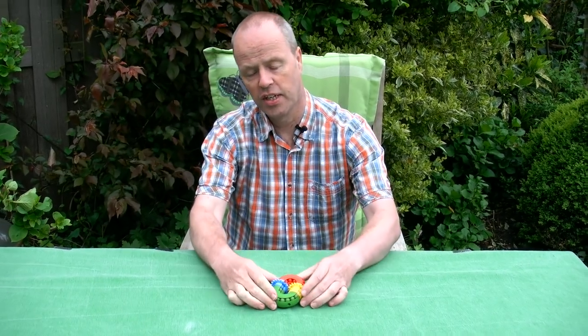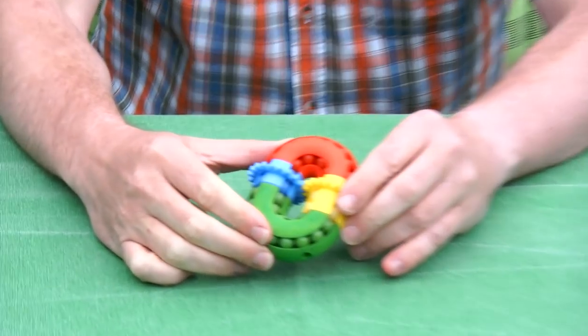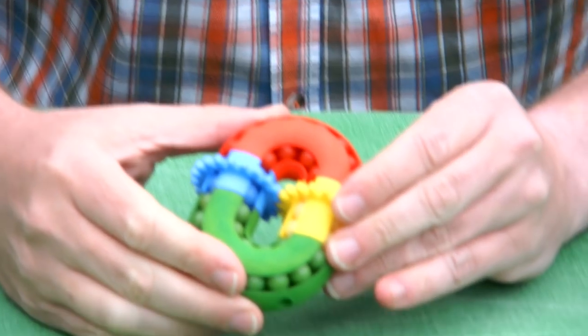Hi, I'm Oscar van Deventer and this is The Magic Bagel. Gears - I like the bacon of twisty puzzles. Everything turns better with gears.